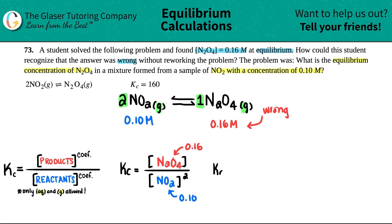So in this case, Kc equals the 0.16, close that up, and then this is going to be the 0.10 and that's squared.